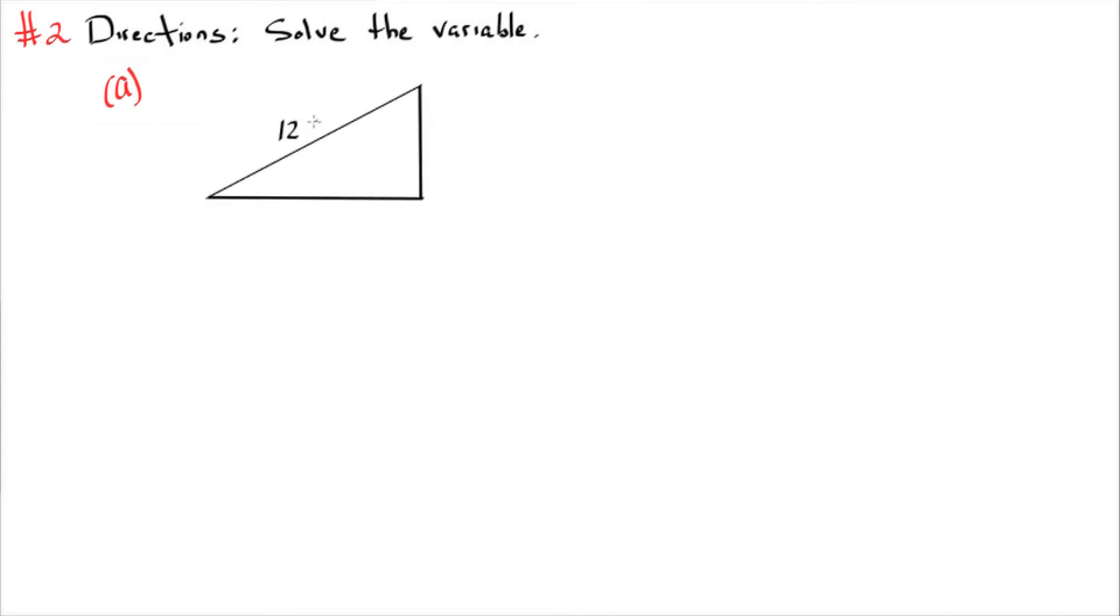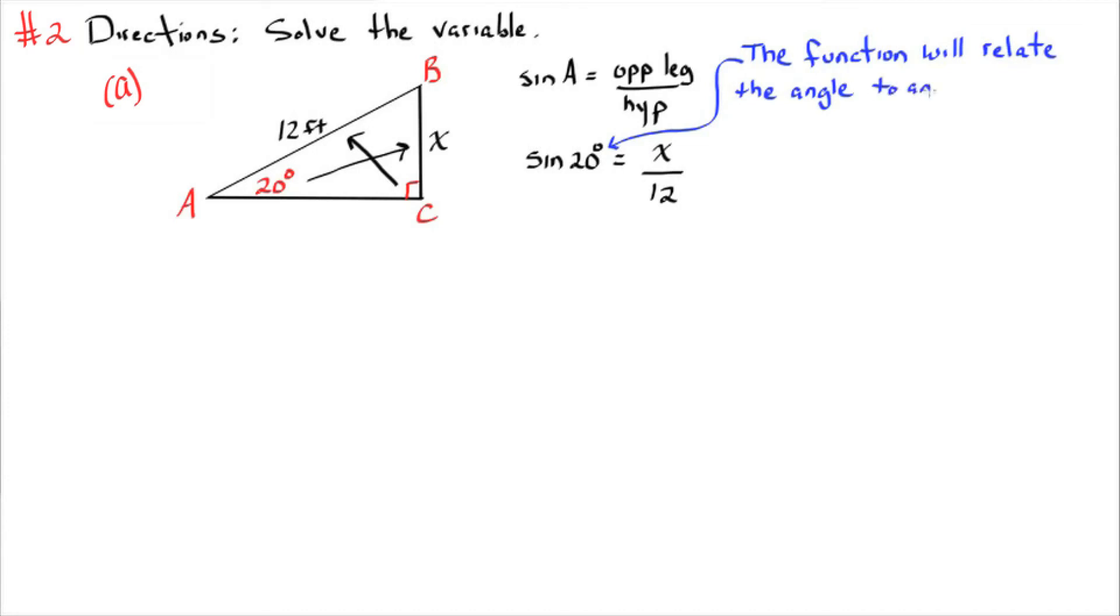SOHCAHTOA. Example 2. Solve a variable. So we're given a right triangle with angle A being 20 degrees, the opposite side being x and the hypotenuse 12 feet. So we're going to use sine for this. Sine of the angle equals the opposite leg over hypotenuse. We're going to substitute 20 in for angle A, and 12 for the hypotenuse.